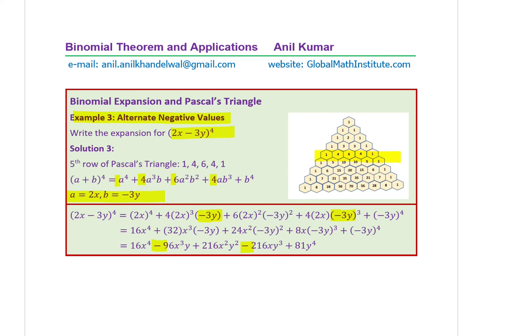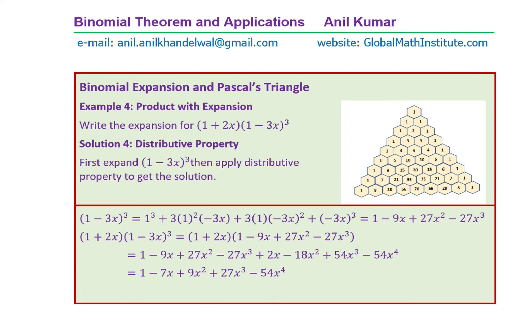Example 4: write the expansion for (1+2x)(1−3x)³. Since those two binomials are different, they have to be multiplied using the distributive property. You expand (1−3x)³ first, which gives 1 − 9x + 27x² − 27x³. In the next step, multiply that by (1+2x) using the distributive property. Simplify and write down your answer as shown.